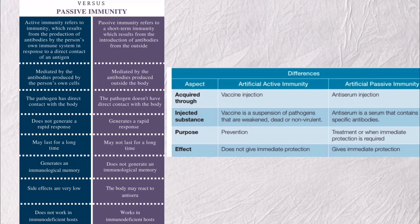The second aspect is the injected substance. In a vaccine (active immunity), the substance contains pathogens that are weakened, dead, or non-virulent. For anti-serum (passive immunity), the serum contains specific antibodies. The third aspect is purpose — active immunity is for prevention, while passive immunity is for treatment or when immediate protection is required.